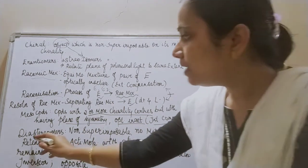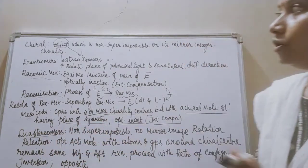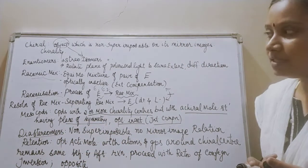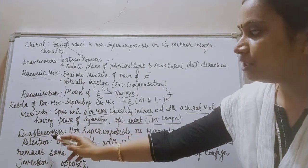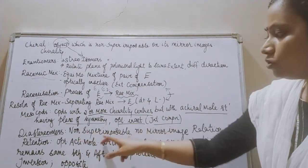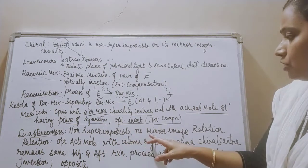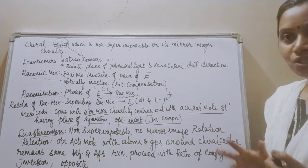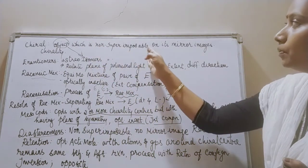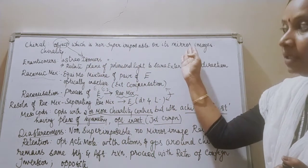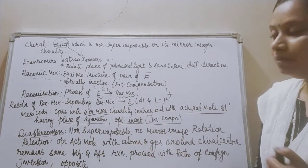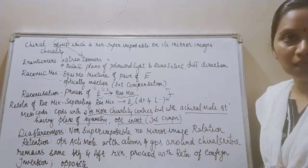Next is diastereomers. We have seen stereoisomers and enantiomers. Diastereomers are also non-superimposable, but there is no mirror image relationship here. For chiral objects, they are non-superimposable on their mirror image, but diastereoisomers are also non-superimposable yet not related to mirror images.